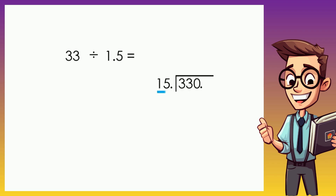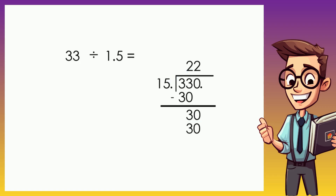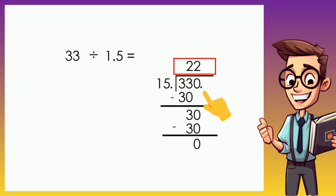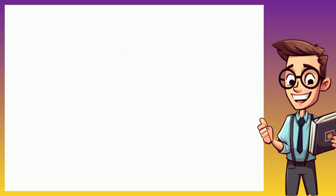What number multiplied by 15 gets closer to 33? That number is 2, because 2 times 15 is 30. Subtracting gives 3. Bringing down 0 makes it 30. Again, the number to multiply by 15 to get 30 is 2, because 2 times 15 is 30. Subtracting gives 0, so the final answer is the whole number 22. We did not raise the decimal point because the division process ended before it even reached the decimal point.